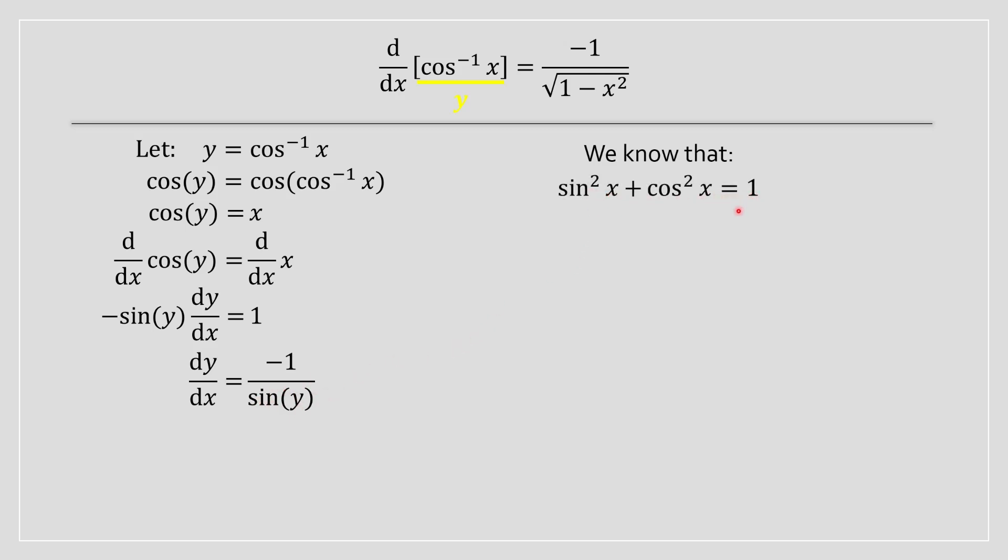Sin squared of x plus cos squared of x is equal to 1. Replacing it with a y term and then solving for sin of y, what you're going to obtain is this: 1 minus cos squared of y. You're going to replace that into the equation over here.